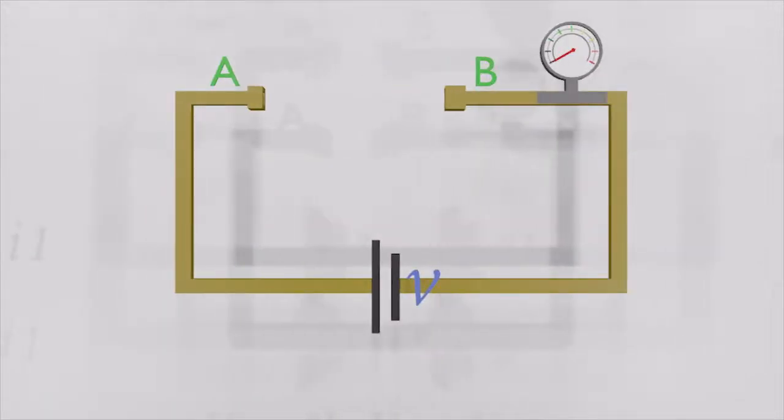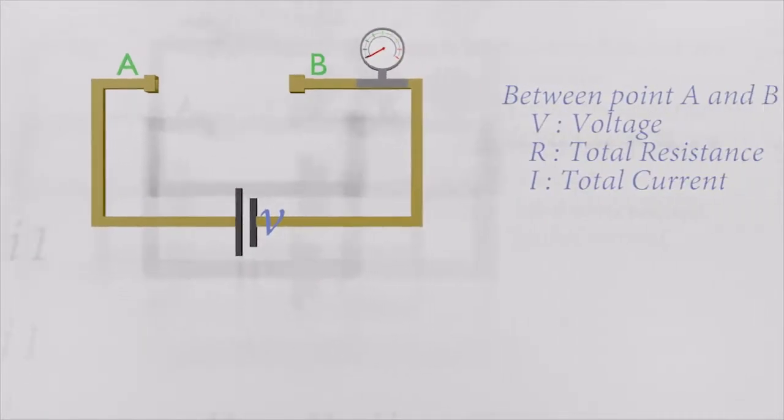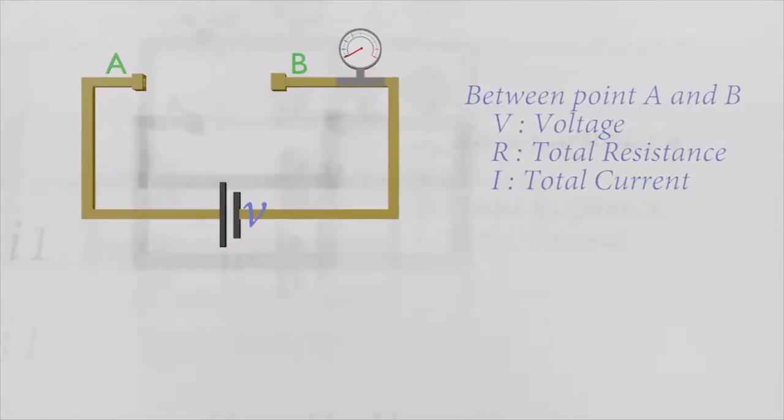Look at this circuit. V, R and I are the voltage, resistance and current between points A and B. If we add an R1 resistor between points A and B, it will pass I1 current through it. Current has no other way to go from A to B. So the total current is equal to I1.